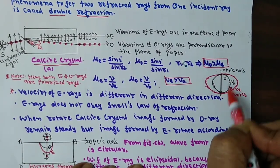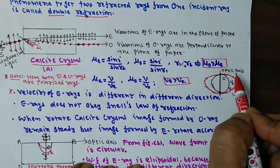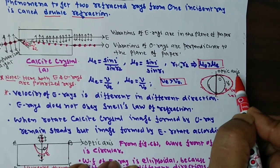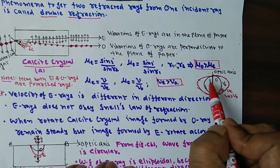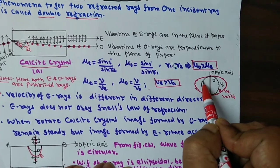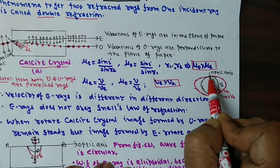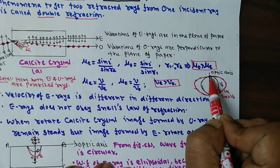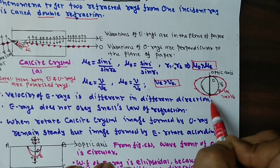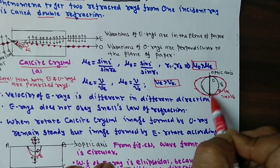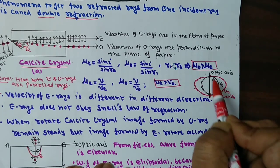What do we mean by the optic axis of a crystal? The optic axis of a crystal is the direction in which the velocity of the ordinary ray and the velocity of the extraordinary ray become equal. At the optic axis, both wavefronts touch each other. So it is called the optic axis.